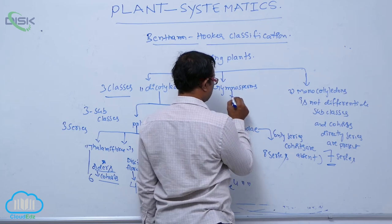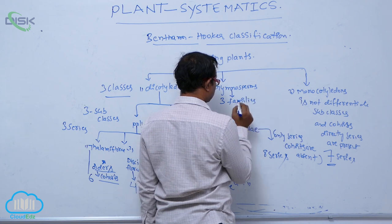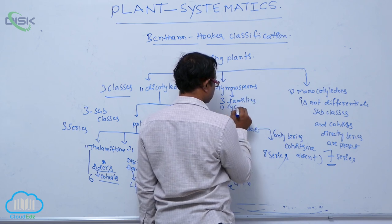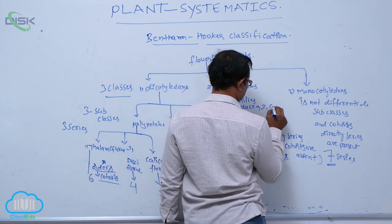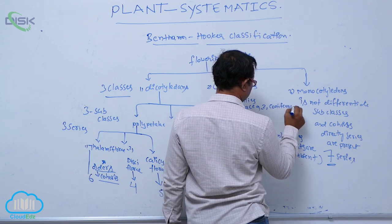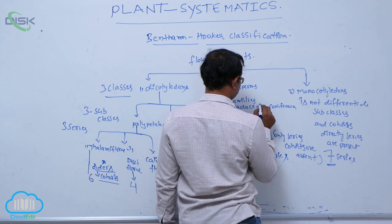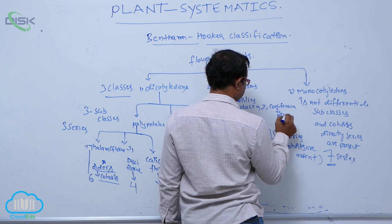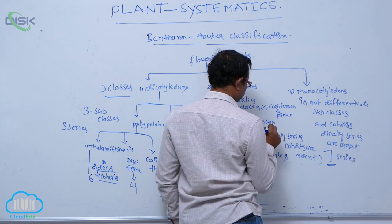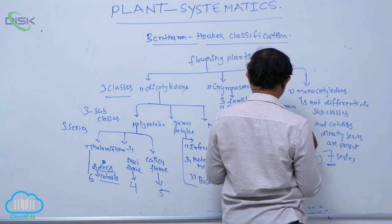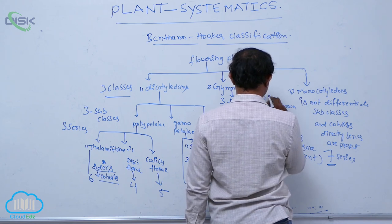Gymnosperms: subclasses, series, and cohorts are all absent. They are divided directly into three families. The first one is Cycadaceae, the second one is Coniferae, and the third one is Gnetaceae. Coniferae example is Pinus; Gnetaceae example is Gnetum; Cycadaceae example is Cycas.